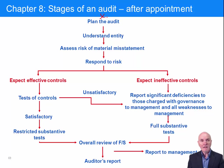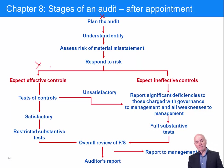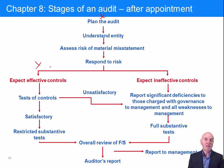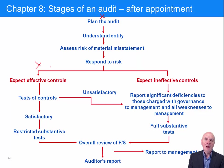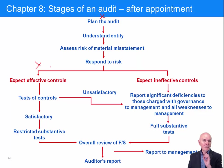Broadly speaking, the pathway through the audit splits. You have some companies — particularly large, well-run companies — where you expect effective internal controls. This is where the company's accounting system is very well set up: lots of reconciliations, lots of people authorizing documents, lots of matching documents — goods received notes matched with invoices, not paying invoices for goods not received. A really tightly run company.